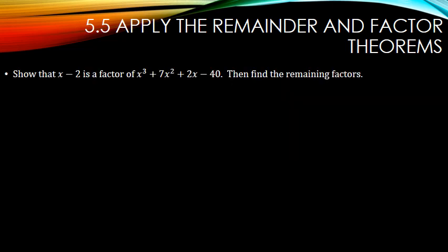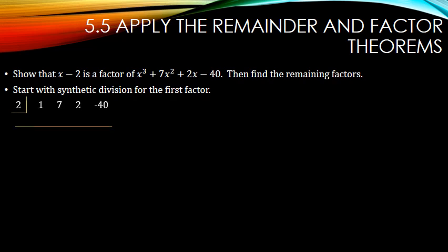For example, show that x minus 2 is a factor of this polynomial, then find the remaining factors. We do synthetic division with our first factor — put 2 in the box, with coefficients 1, 7, 2, and negative 4. Bring down the 1. Multiply 2 times 1, add to get 9. Multiply 2 times 9, add to get 20. Multiply 2 times 20 to get 40, add to get 0. Since the remainder is 0, it is a factor.